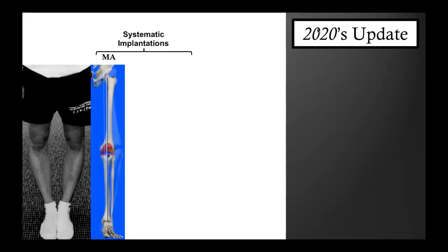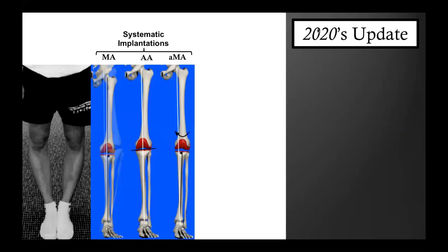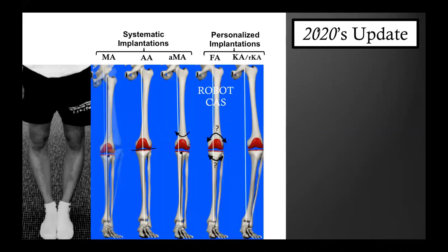There are three systematic implantation techniques: the mechanical alignment, the anatomical alignment, and the adjusted mechanical alignment techniques. There are two personalized implantation techniques: the functional alignment and the kinematic alignment techniques. The restricted kinematic alignment concept corresponds to the kinematic alignment technique and only applies for a fraction of patients with severe limb deformity or joint line obliquity.